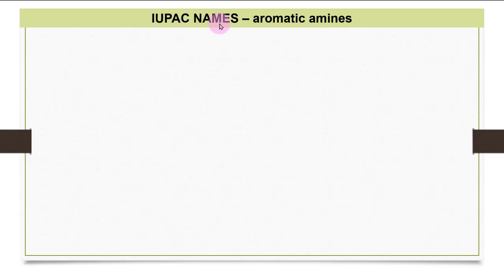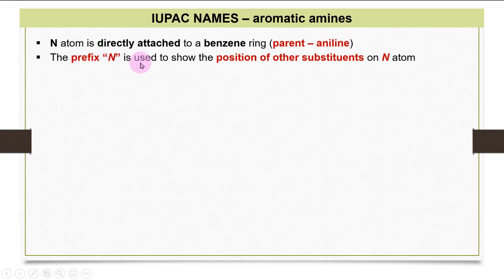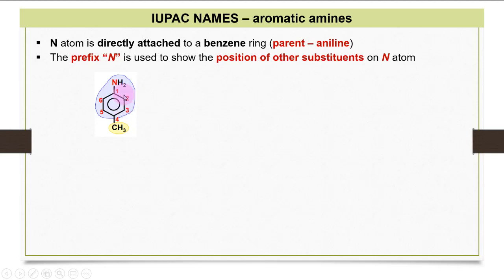For IUPAC names of aromatic amines, nitrogen must be attached directly to benzene. The parent name is aniline — benzene with an NH2 group. The prefix N is still used to show positions of substituents on nitrogen. For example, if there is a methyl group at carbon four, the name is 4-methylaniline. If a methyl group is attached to the nitrogen, the name is N-methylaniline.